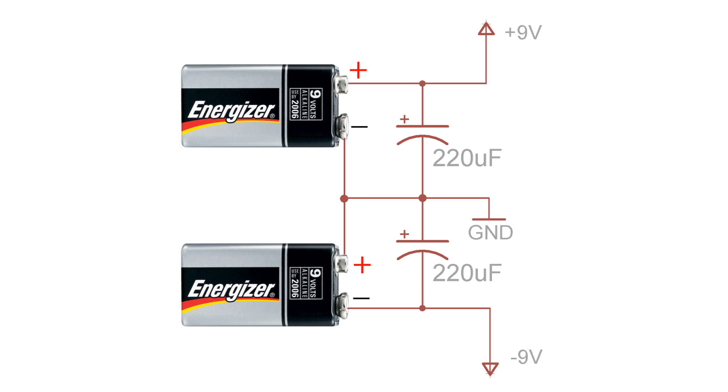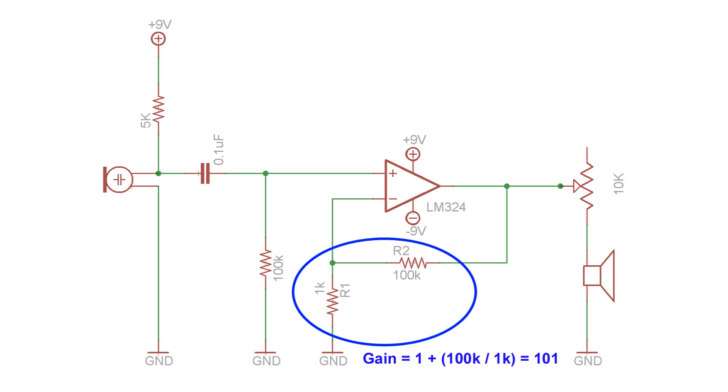To power the amplifier, I am going to use the same 9 volt battery circuit that I showed you earlier. If you look at the resistor values I have chosen here, you can see that they will give the amplifier a gain of 101, close enough to 100.